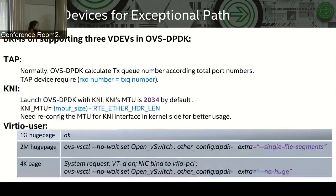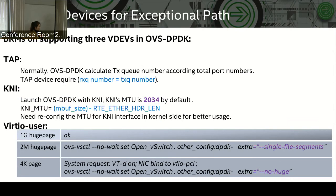There are some best known methods for supporting these virtual devices in OVS DPDK. For TAP, normally OVS DPDK needs to calculate TSQ number according to the total queue number, but the TAP device requires TSQ number the same as RXQ number, so we need to be careful about that. For KNA, if launching OVS DPDK with KNA, the MTU of KNA is 2,034 by default, which is not correct since the MTU of other ports in OVS DPDK is 1,500. So we need to reconfigure the MTU for KNA interface to 1,500 in kernel for better usage.